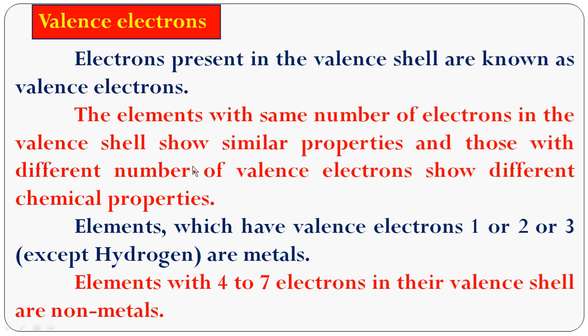Some elements with a different number of valence electrons show different chemical properties. For example, lithium, sodium, magnesium, and aluminium — they have different valence electrons, so they have different chemical properties.